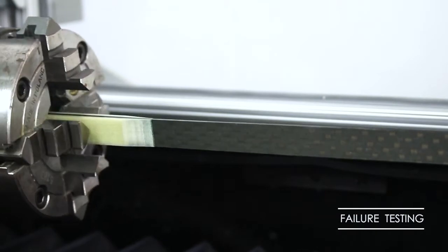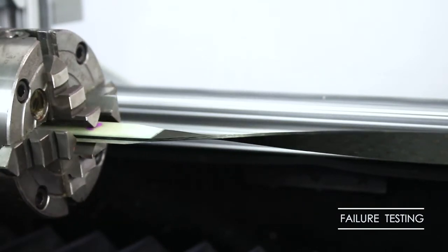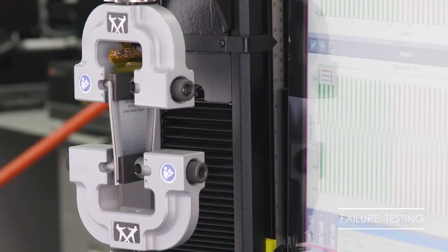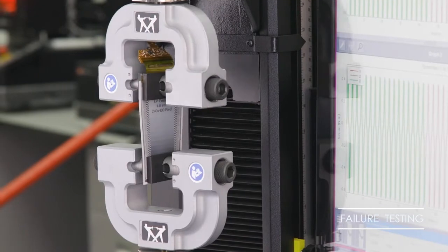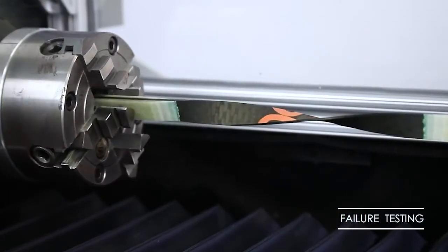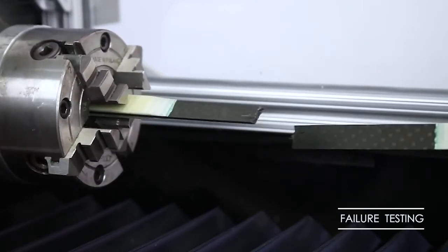Failure testing is when a product, component, or specimen is twisted until failure. This may be a static test to determine the ultimate shear strength or a cyclic test to determine product longevity before failure under various loading conditions. Failure can be classified as either a physical break or a yield or defect in the specimen.